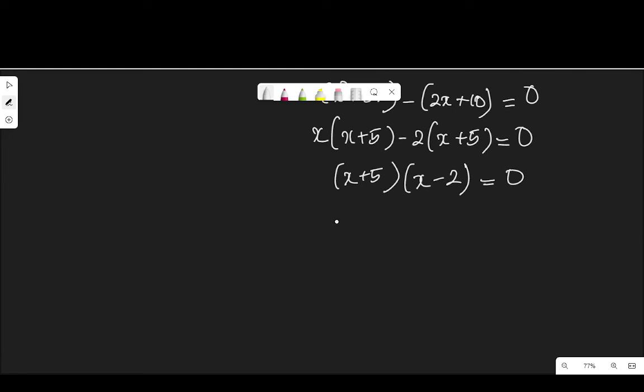That means x plus 5 is equal to 0, or x minus 2 is equal to 0. And when plus crosses equality becomes minus, I have negative 5. And when minus crosses equality becomes positive. So x is equal to negative 5 or 2.